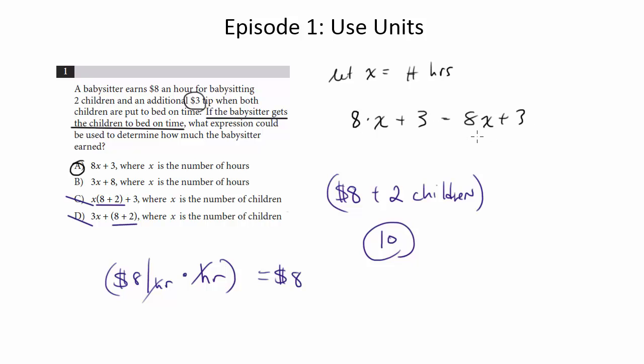Because if you look in the final answer, 8x plus 3, this as we discussed here is dollars. This is $3, it's also in dollars. And I can add together dollars and dollars to get dollars. So the units are consistent and everything points to choice A.